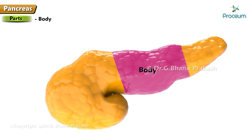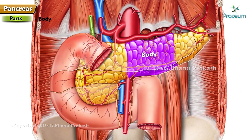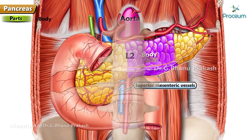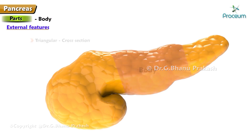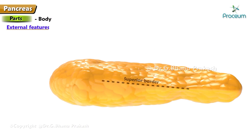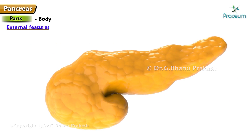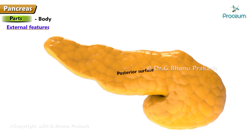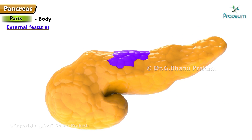Body of the pancreas: it is an elongated part extending from the neck to the tail, lying to the left of the superior mesenteric vessels, passing over the aorta and L2 vertebra. External features: it is triangular in cross-section and has three borders — anterior, superior, and inferior — three surfaces — anterior, posterior, and inferior — and one process, the tuber omentale.